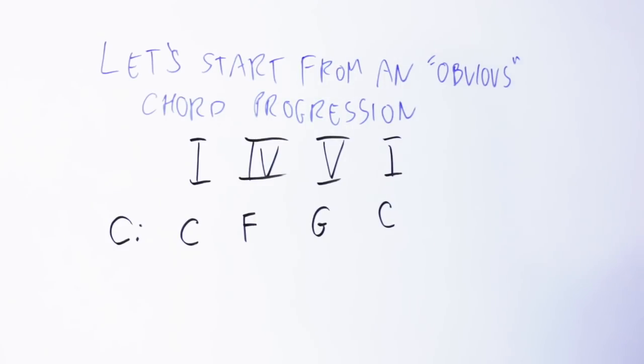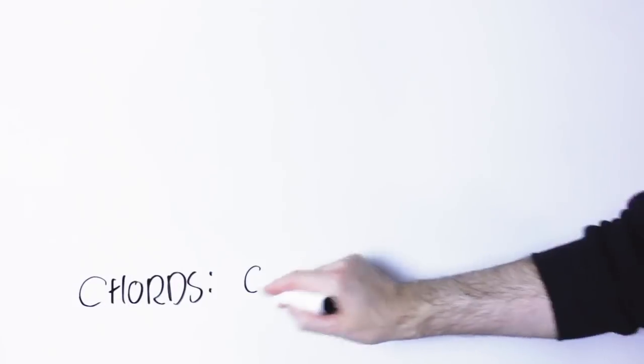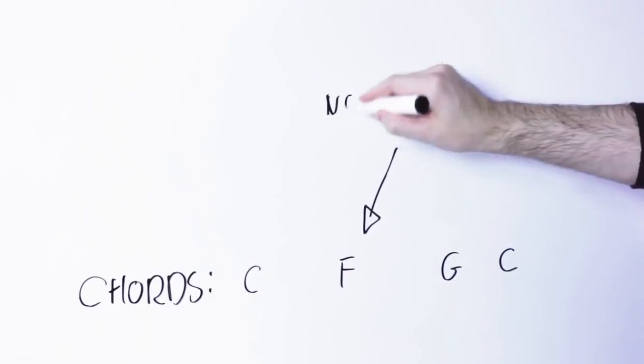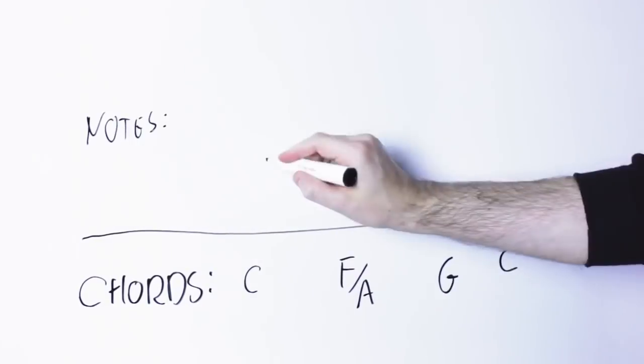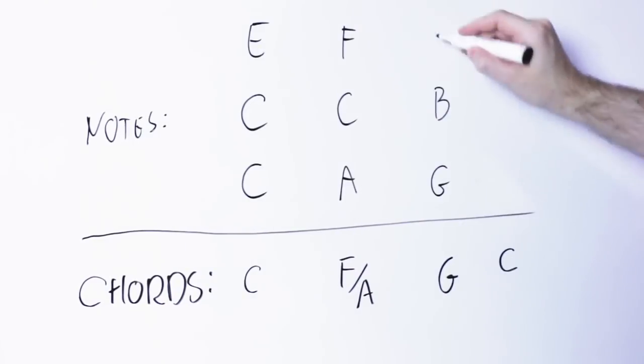But this chord progression supports an incredible number of melodies. So composers have a vested interest in making this chord progression more interesting. One way you can make this chord progression more interesting is to play, for instance, the F chord in first inversion. That will mean taking the third note of the F chord, A, and playing it as the lowest note of the chord, so at the bass.